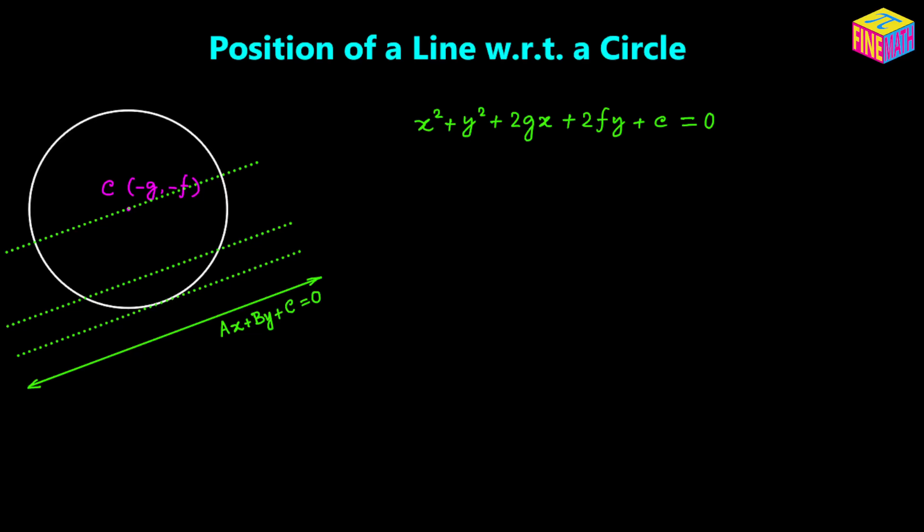A straight line can also be a normal to the circle, meaning the straight line could go through the center of the circle. So if we are given the equation of a circle and the equation of a straight line, how are we going to determine whether the straight line is outside of the circle, tangent to the circle, a secant line, or a normal line? That's exactly what we are going to discuss in this video.